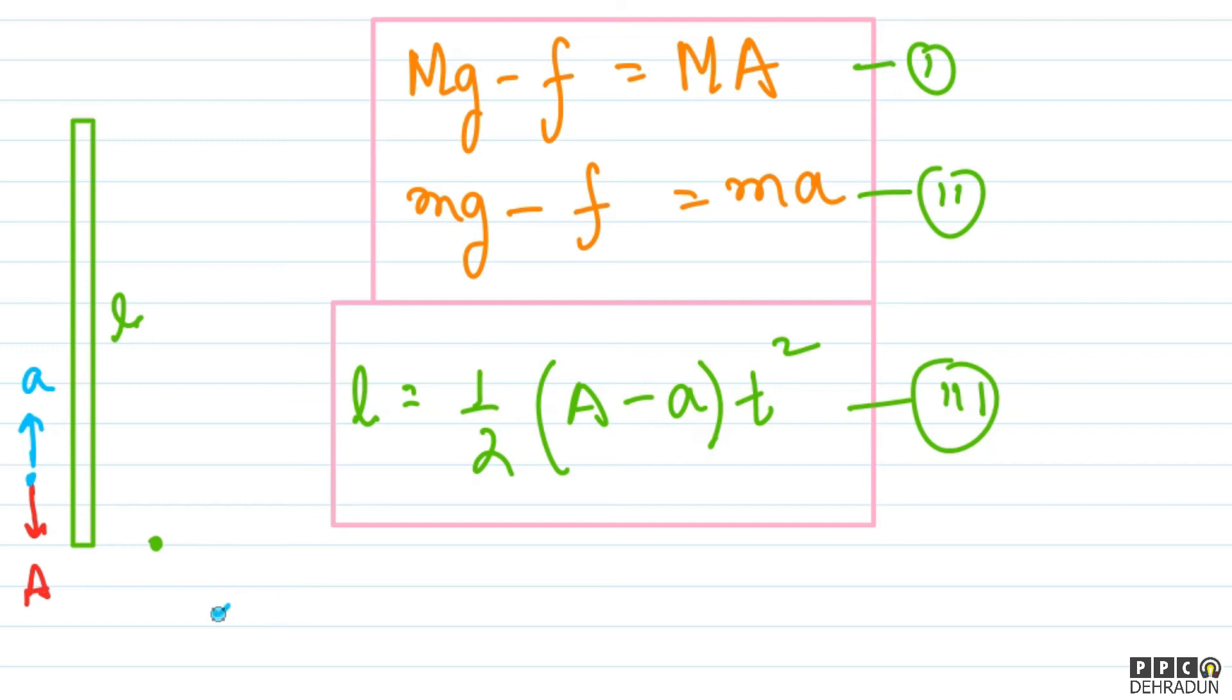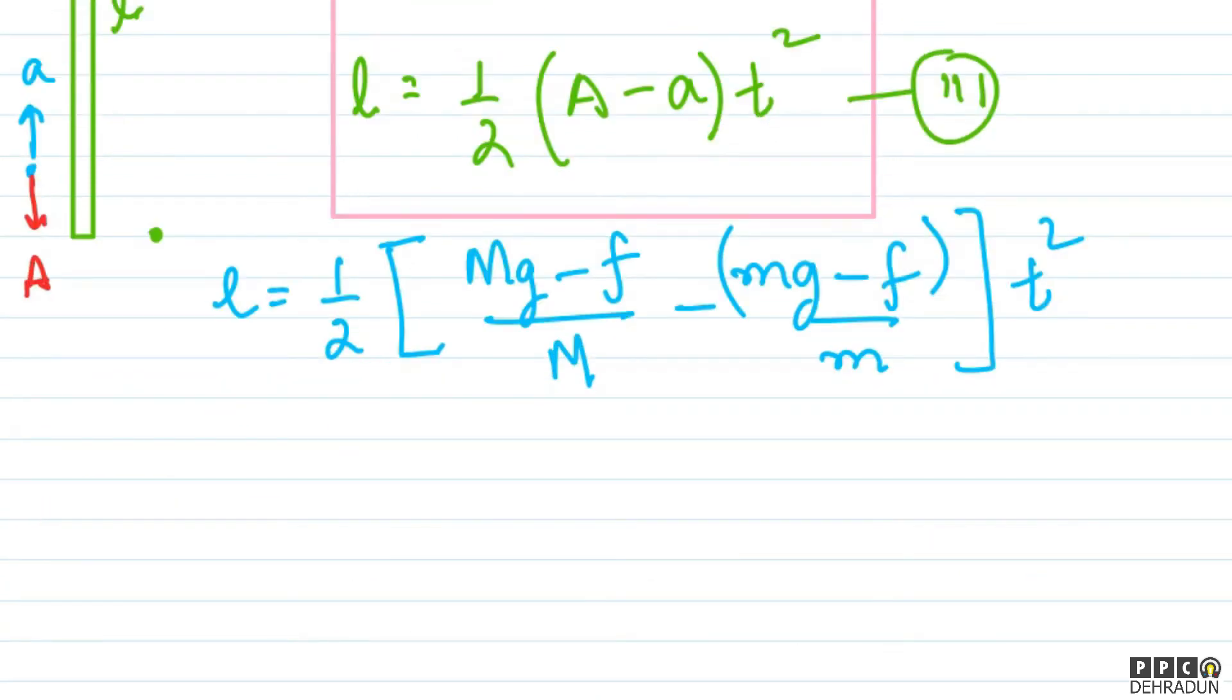So what will we get? We'll get friction. So let's follow this and see what comes. First, L equals what we wrote - half multiplied by, half multiplied by capital A's value which will be capital Mg minus friction divided by capital M, minus small a's value which will be small mg minus friction upon small m, and outside we'll have t square, clear.